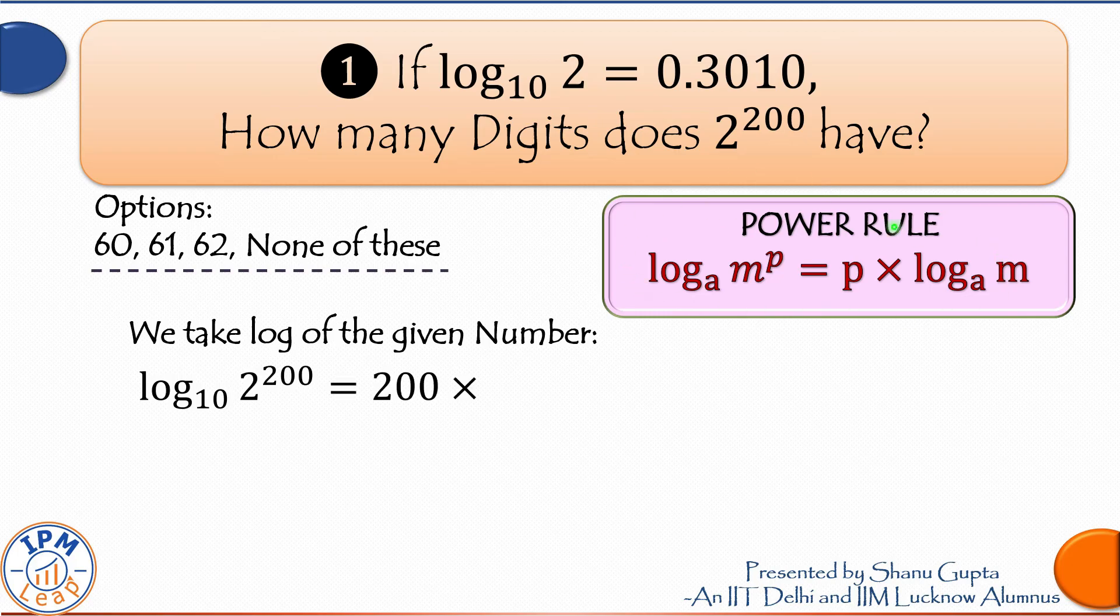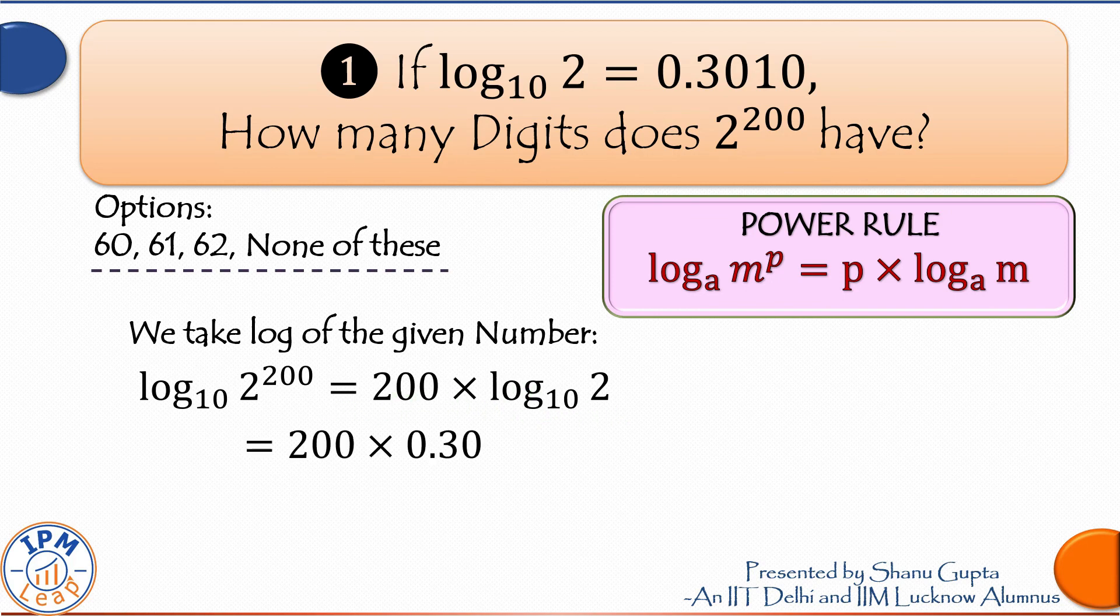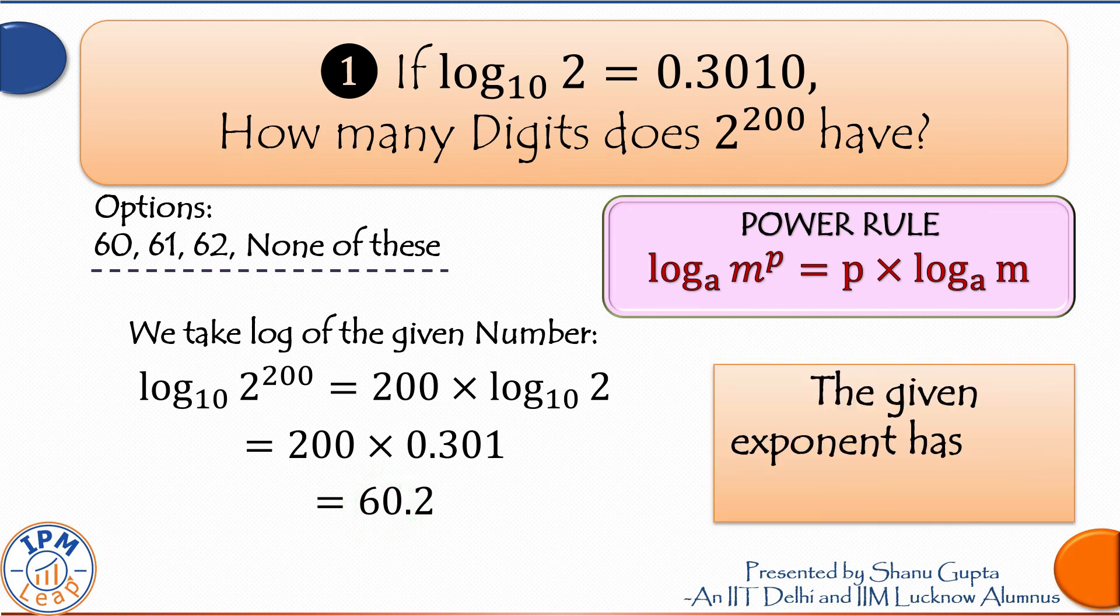Log of 2 raised to the power of 200 is equal to 200 times log 2. 200 into the value of log 2, which is 0.301, is equal to 60.1. The characteristic of this is 60. And since the number of digits in the given exponent is 1 more than the characteristic, our answer to this question is 61. We take that option and move on.